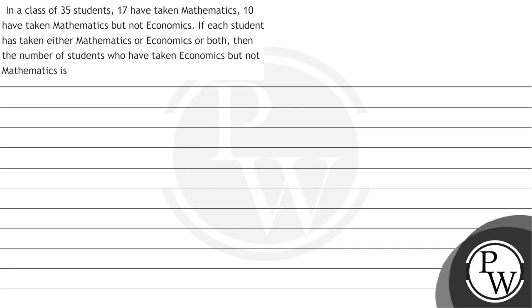Hello guys, let's read the question first. The question says in a class of 35 students, 17 have taken mathematics, 10 have taken mathematics but not economics. If each student has either taken mathematics or economics or both, then the number of students who have taken economics but not mathematics is...